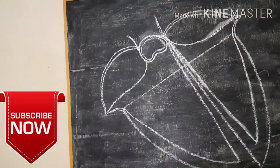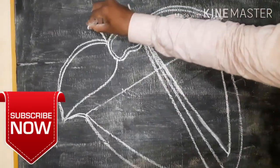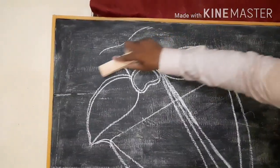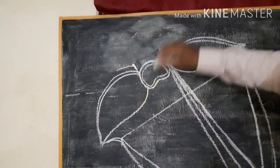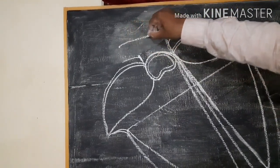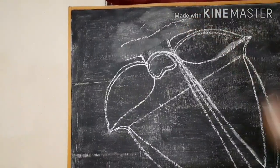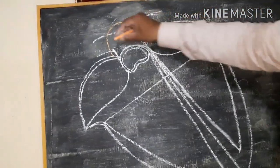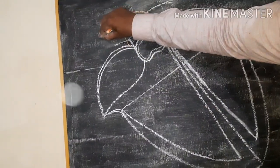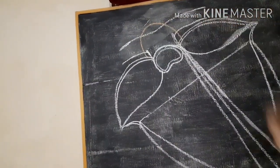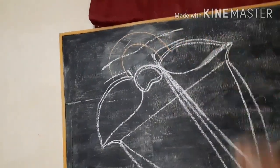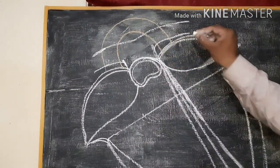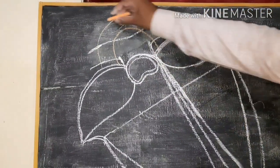Now you have to draw the pulmonary aorta and systemic aorta. This is the pulmonary aorta divided into right and left pulmonary aorta. Here we will see the systemic aorta — you have to draw the systemic aorta like this, with openings on it.